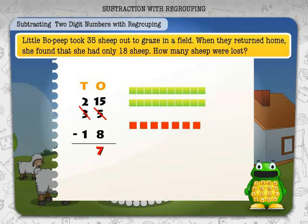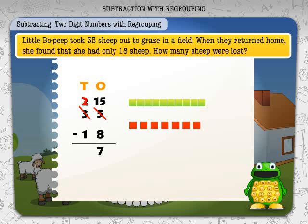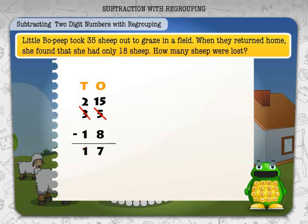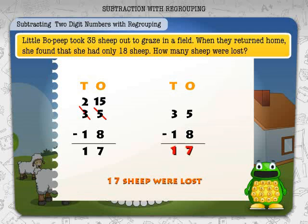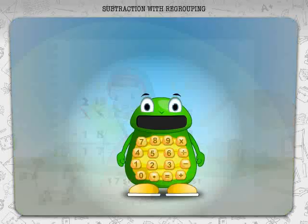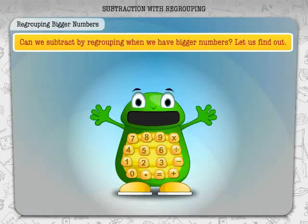We subtract eight ones from fifteen ones — there are seven ones left, so we write seven in the ones place. We then subtract one ten from two tens — there is one ten left, so we write one in the tens place. 35 minus 18 is equal to 17.